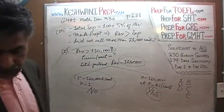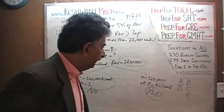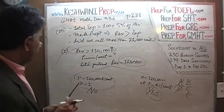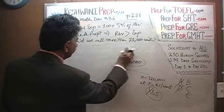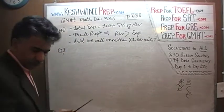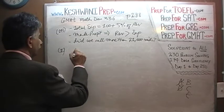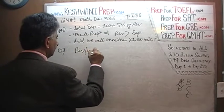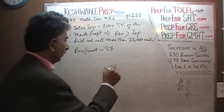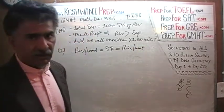The answer cannot be A or D — it will have to be either B, C, or E. Let's look at the second statement. They tell us that the revenue per unit was $5 — revenue per unit is just an awkward way of saying price per unit. So now we know they're selling it for $5 per unit.